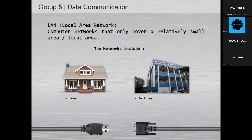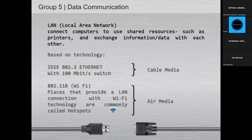Definition of LAN: Local Area Network is a computer network that only covers a relatively small or local area. The network includes home and building communication networks connecting various terminals or computers within a building or limited geographical area. LAN connects computers to share resources such as printers and exchange information or data with each other.